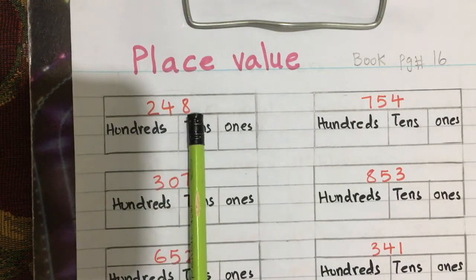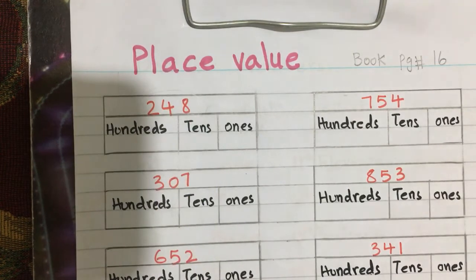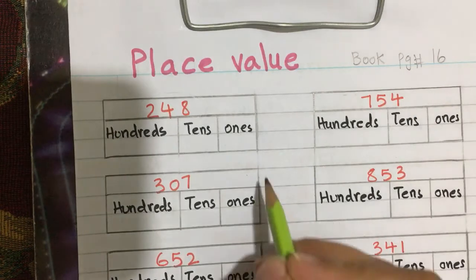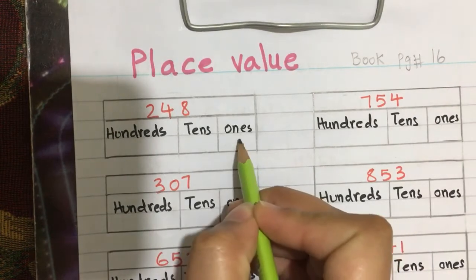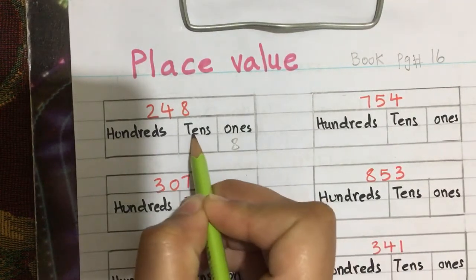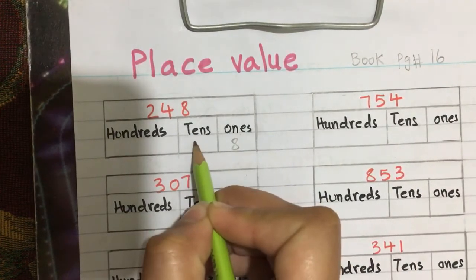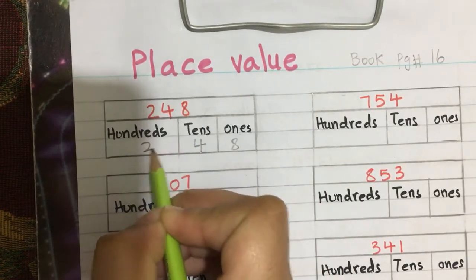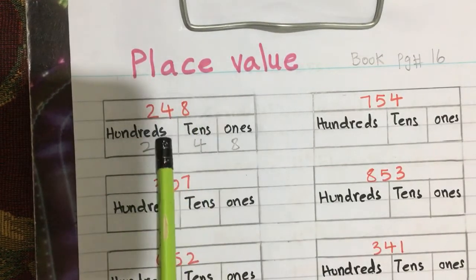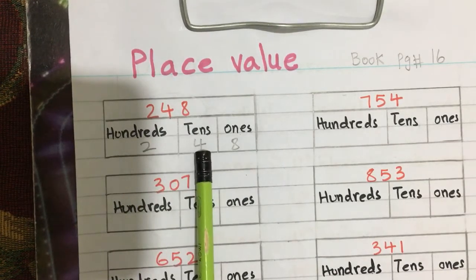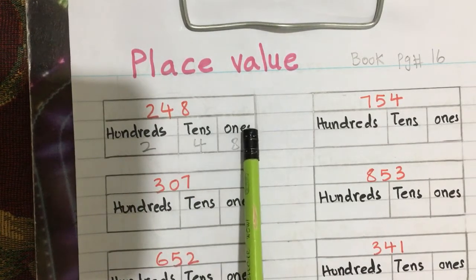This is the number 248. First of all, we will write their place values from right to left: ones, tens, and then hundreds.